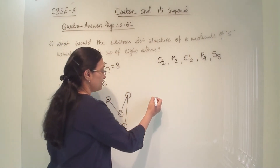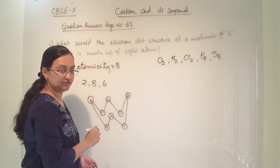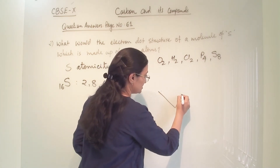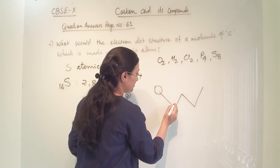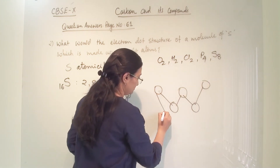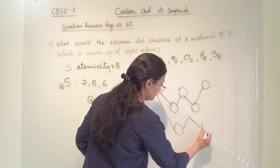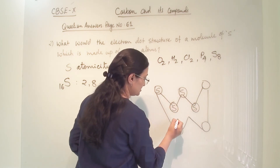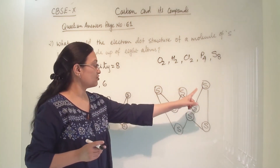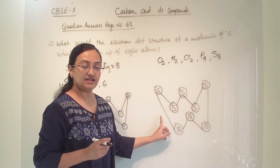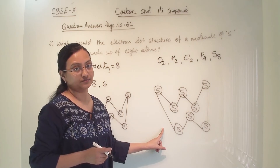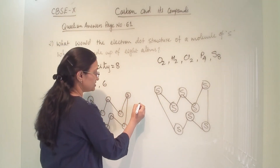We can write S to show one atom, or if we want to show the electrons, we draw the structure and place a sulphur atom at each corner. There are 8 atoms in one molecule of sulphur, and they are sharing 2 electrons with each other. So in between 2 sulphur atoms, we can show the kind of bonding occurring.